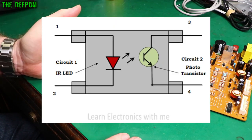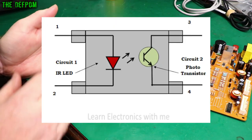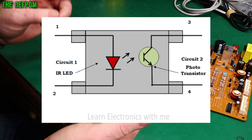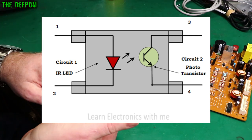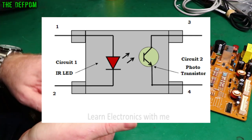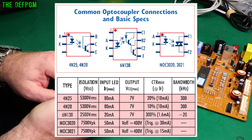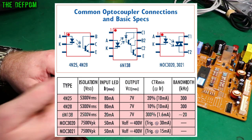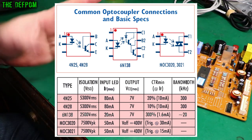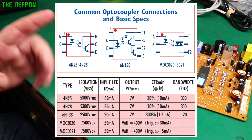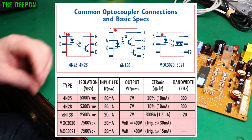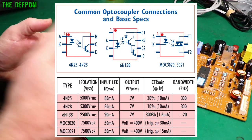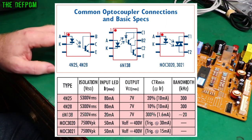Optocouplers have an LED on the input and the output has some kind of transistor — either an NPN transistor (BJT), or it could be a DIAC output, which is used for AC systems and basically allows AC waveforms to be controlled rather than just DC type systems. So it's either a BJT or a DIAC in most cases.